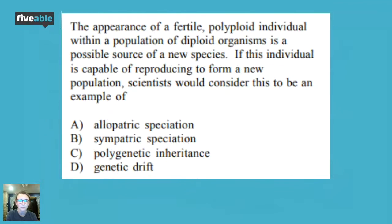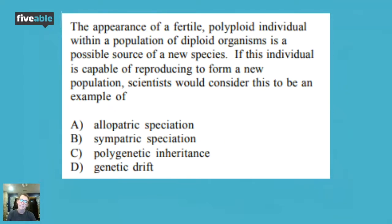One more question from an old AP exam: the appearance of a fertile polyploid individual within a population of diploid organisms — remember polyploid means more than the normal number of chromosomes — is a possible source of a new species. If this individual is capable of reproducing to form a new population, scientists would consider this an example of sympatric speciation. It's harder to get speciation to occur among populations still living in the same area, so we have to work a little harder for it.